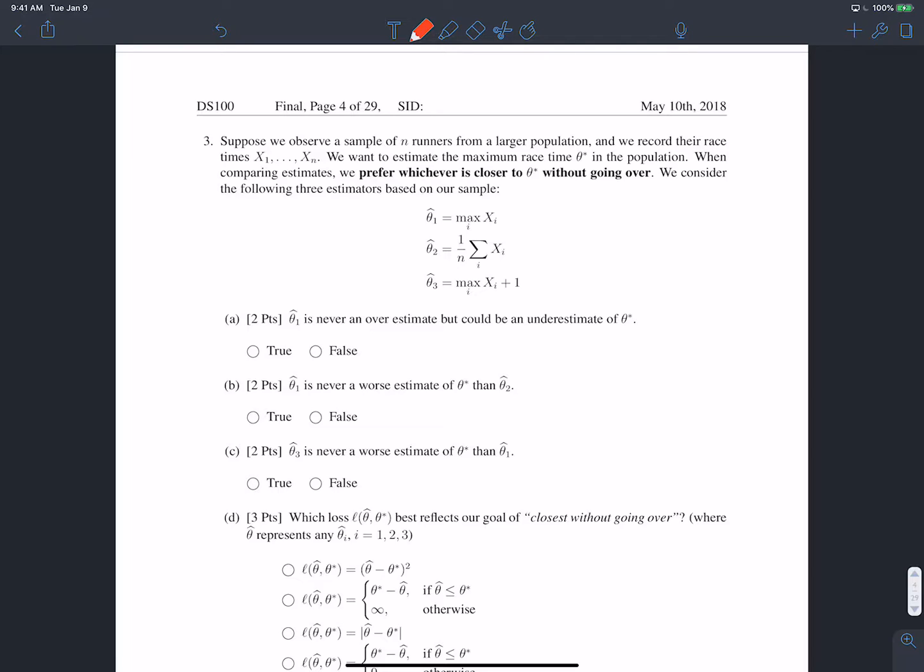And we have these three types of estimates, theta 1 hat, theta 2 hat, and theta 3 hat. And when we're comparing these estimates, we prefer whichever one is closest to theta star without going over. So we want to penalize the case when our estimate is larger than the true theta star. So our theta 1 is the maximum value in our sample. Theta 2 is the average value of our sample. And theta 3 is the maximum value in our sample plus 1.